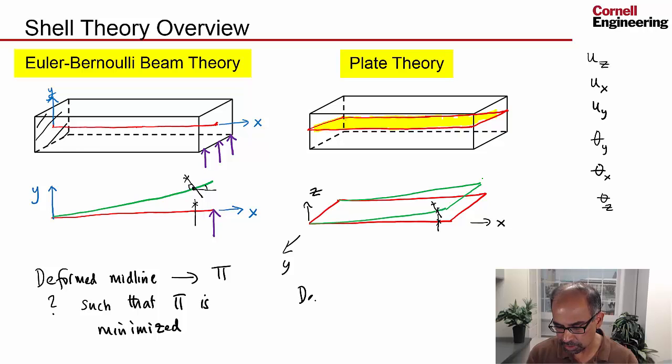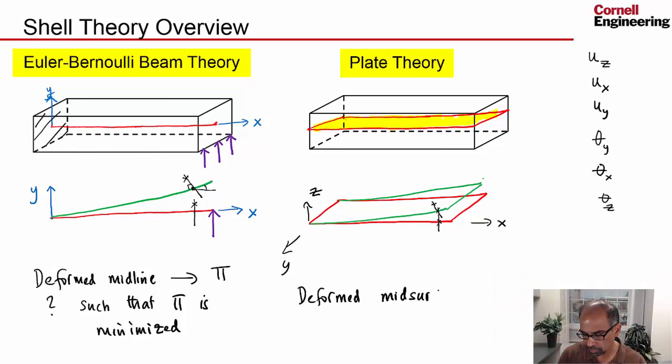If I know the deformed mid-surface, I can figure out what the potential energy of the structure is. I would need to know the thickness, because this normal is as high as the thickness or half the thickness in one direction. So I need to know the thickness, and then I can find the strains. From the strains, I can find the stresses if I know the material properties. Then the problem reduces to finding the deformed mid-surface such that potential energy is minimized.